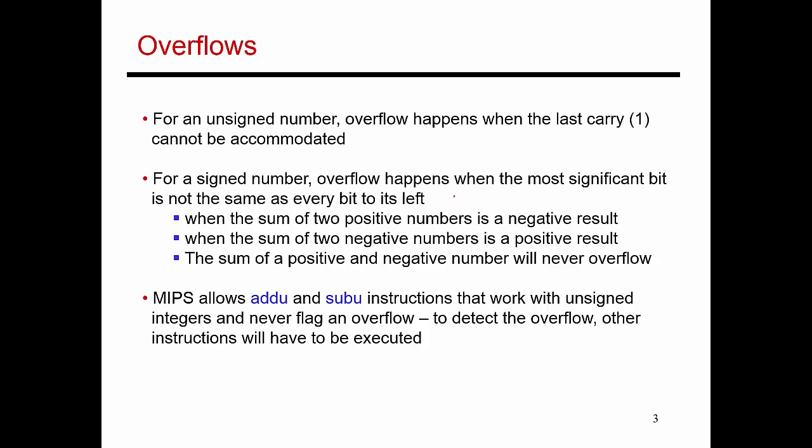Before I move on to multiplication, let's talk briefly about overflow conditions. When I'm adding two numbers — or when I'm adding two positive numbers, let's say two unsigned integers — overflow situations can happen. An overflow happens when the 33rd bit becomes a 1. So if I'm adding two 32-bit numbers and there's a carry generated from the addition of the most significant bits, then I end up having an overflow.